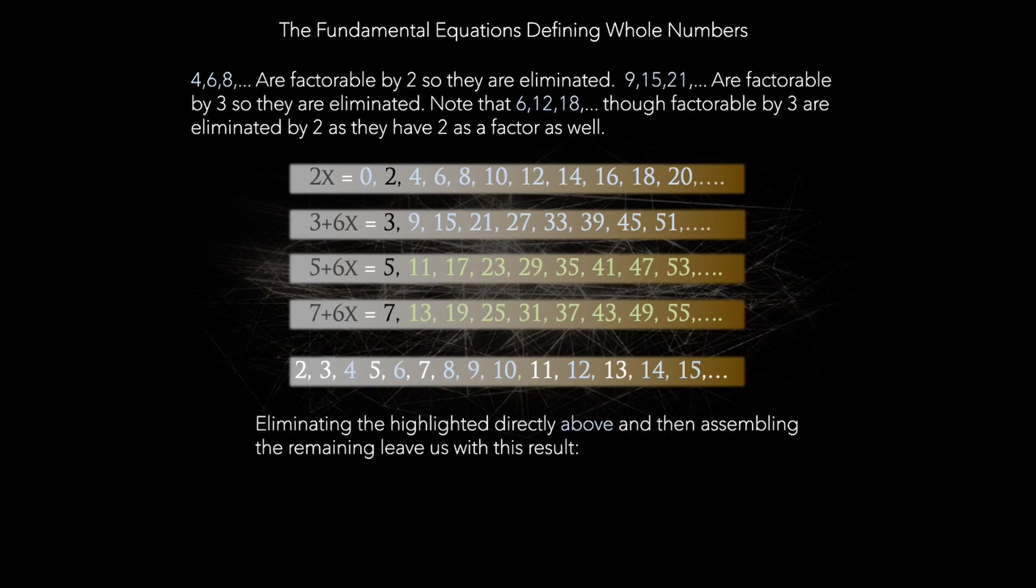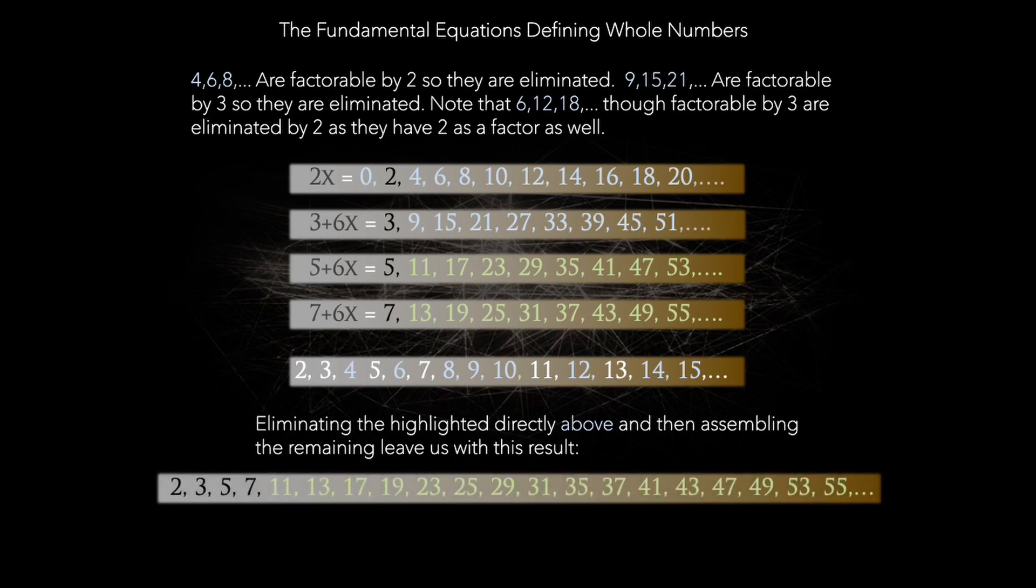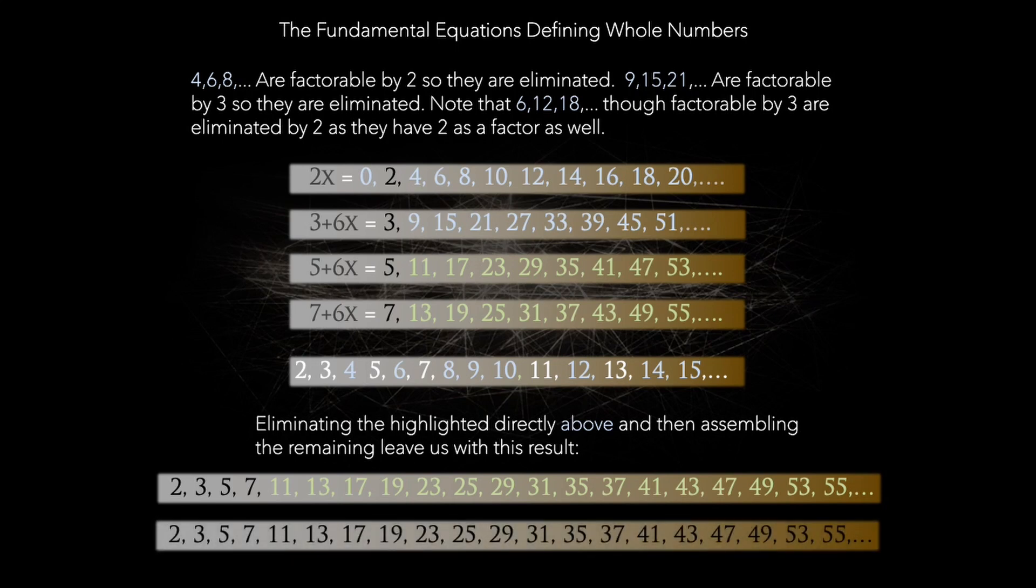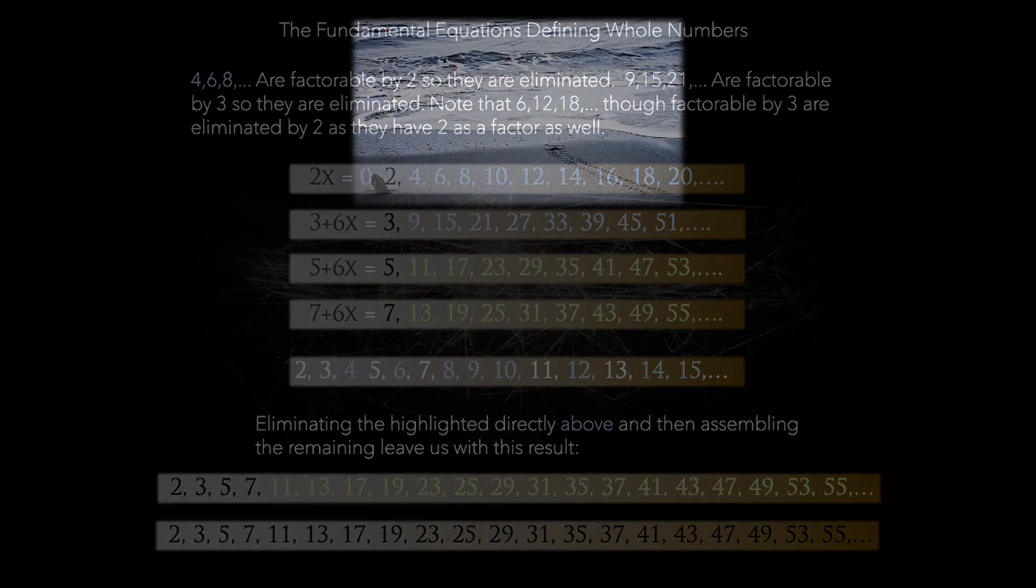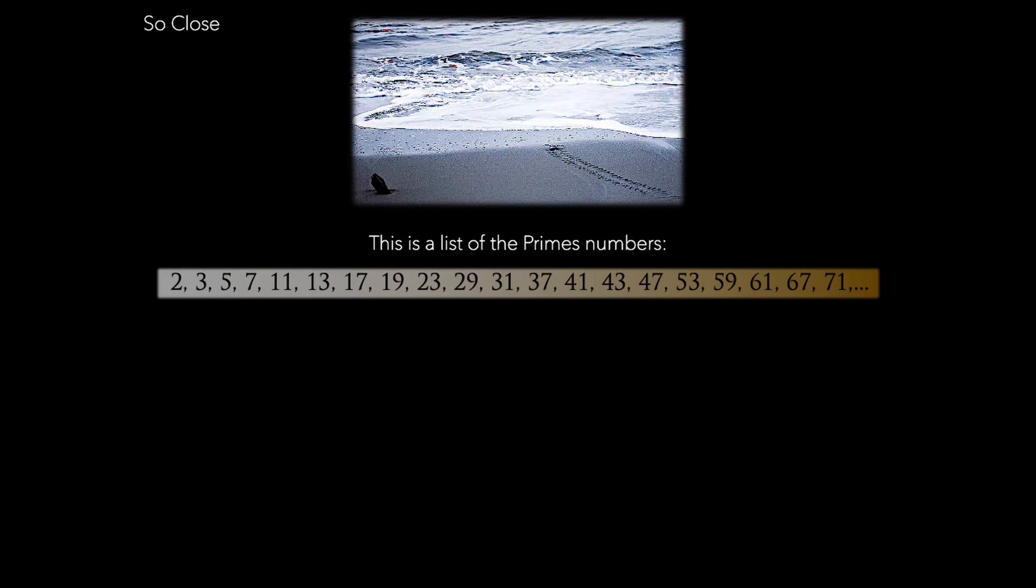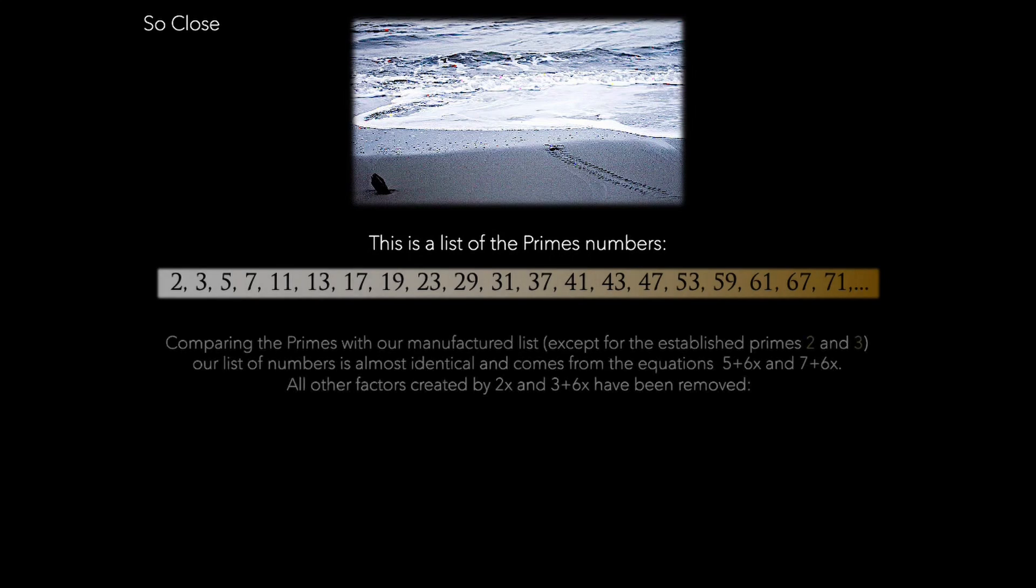By applying 5 plus 6x and 7 plus 6x uniquely, as you will see, we can eliminate the composite numbers, leaving us with the exact prime number sequence. It's a breakthrough that bridges the gap between potential primes and true primes. What has been discovered are equations that not only generate all possible primes, but also provide the mechanism to eliminate non-primes, resulting in the pure prime number sequence.